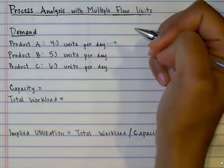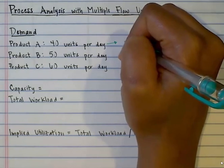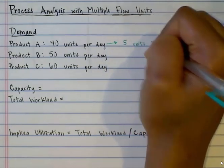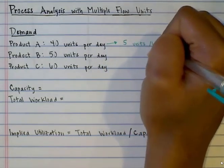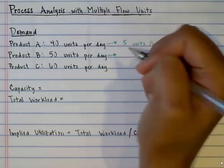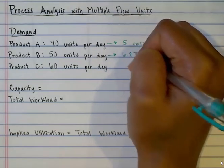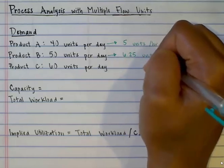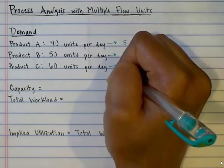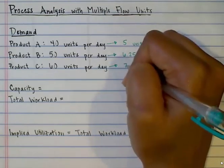Product A has a demand of 40 units per day. 40 units per day divided by 8 hours per day equals 5 units per hour, so each resource must produce 5 units per hour to satisfy demand. Similarly, product B has a demand of 50 units per day — 50 divided by 8 is 6.25, so demand is 6.25 units per hour.